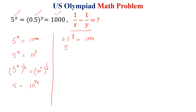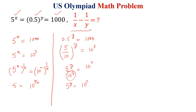Similarly, 0.5 to the power y is equal to 1000. We can write this as (5 divided by 10) to the power y is equal to 10 to the power 3, which gives 5 to the power y divided by 10 to the power y equals 10 to the power 3. Multiplying both sides by 10 to the power y, we get 5 to the power y equals 10 to the power (3 plus y). Taking both sides to the power 1 over y, we get 5 is equal to 10 to the power (3 plus y) over y.